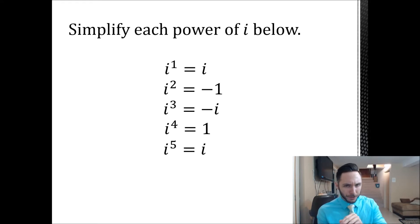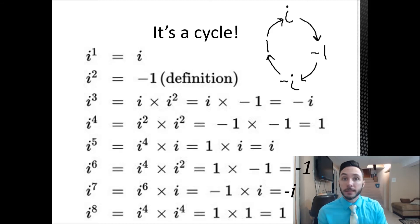I'm going to make up some sort of conjecture as to what i to the sixth might be, then i to the seventh, and i to the eighth, and i to the ninth, and i to the tenth, and so on. For the big reveal, it's a cycle, right? So if we have i to the first, that's just i, i to the second is negative one, i to the third is negative i, i to the fourth is one. And then once we get back to i to the fifth, we're back around to i again. And that just kind of goes in a circle.